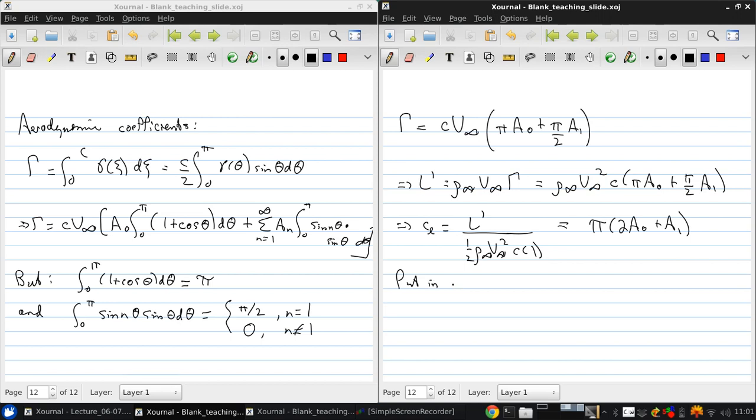So if we put in the expansions for a0 and a1, we can get cl is 2 pi alpha plus 1 over pi, again, this term that looks something like an average camber angle. So the lift slope a0, which is dcl d alpha, is again just 2 pi. Because only this term depends on the angle of attack. This term depends only on the airfoil geometry.